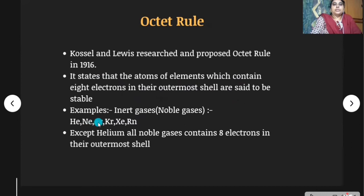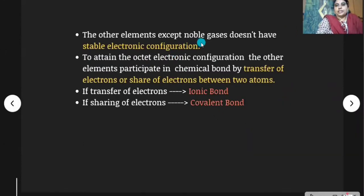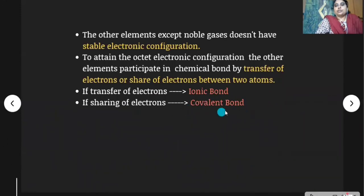The noble gases are helium, neon, argon, krypton, xenon, and radon. Except helium, the remaining noble gases contain eight electrons in their outermost shell. Helium contains only two electrons (1s²), which is a fully filled electronic configuration and is also stable. Other elements except noble gases don't have stable electronic configuration, so to attain the octet electronic configuration, they participate in chemical bonding by transfer of electrons or sharing of electrons. If transfer of electrons takes place, ionic bond is formed; if sharing of electrons takes place, covalent bond is formed.